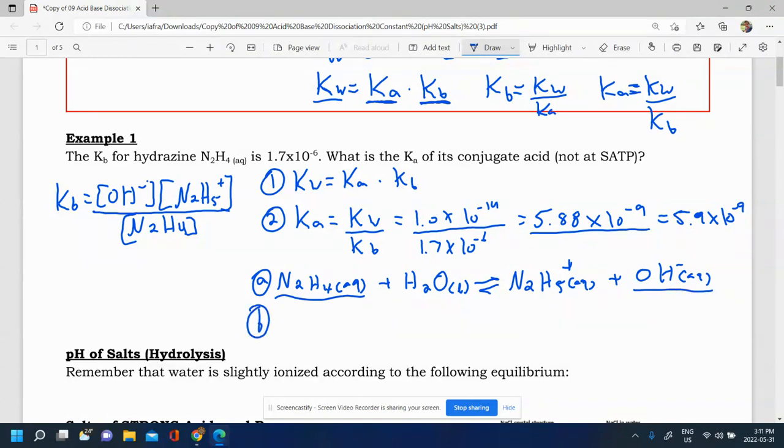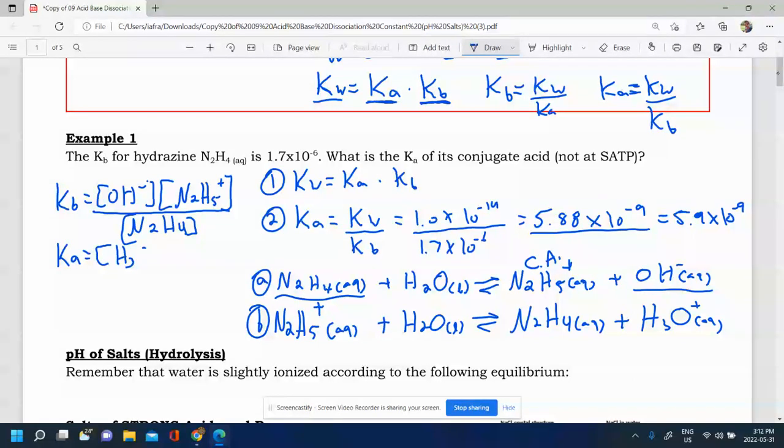So now I'm going to make the equation for the conjugate acid reacting in water. So if the conjugate acid was reacting in water, you would get this. So this is N2H5 plus, it's going to give away an H. So you'll get N2H4 again. And then since it gave away an H to water, H3O plus. And so for that, I'm going to write a Ka. I'm going to get H3O plus times N2H4 over N2H5 plus.